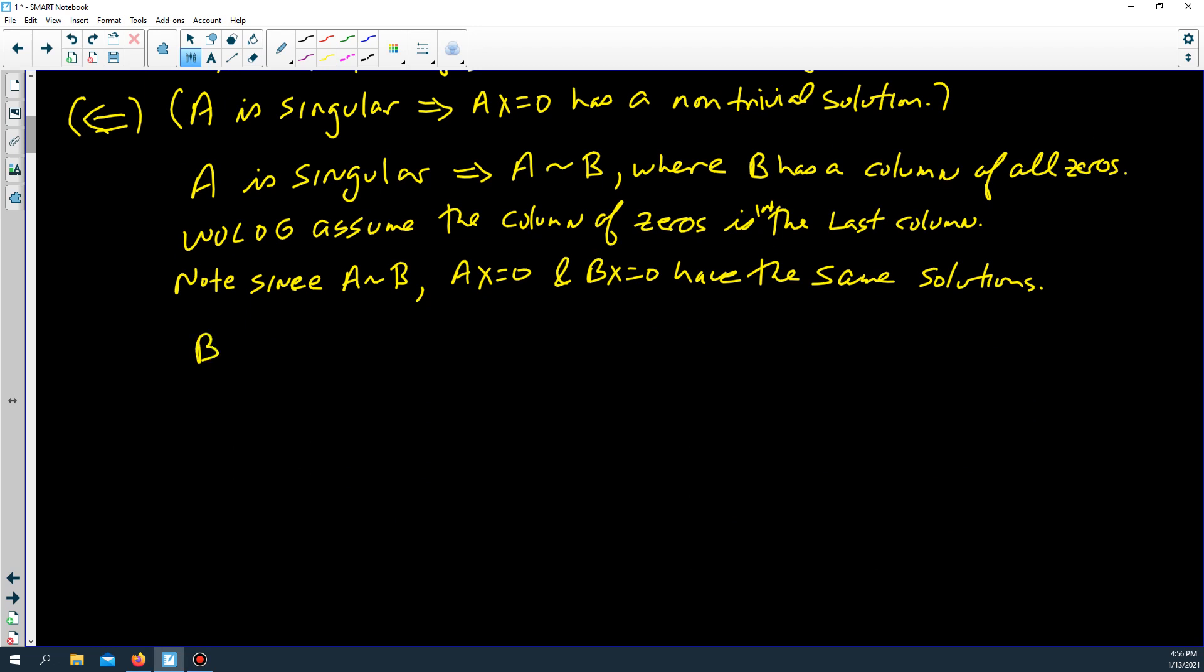So, B times x is equal to B, which is B11, B12, all the way up to B1 n minus 1 and then 0. And then B21, B22, all the way down to the next to the last column, which is B2 n minus 1. Last column is 0. All the way down to Bm1, Bm2, all the way down to Bm n minus 1 and then 0.